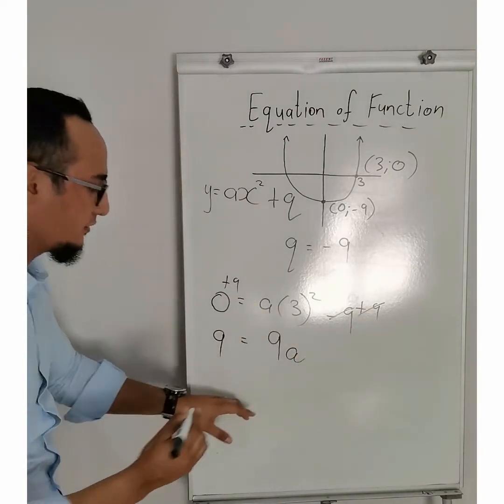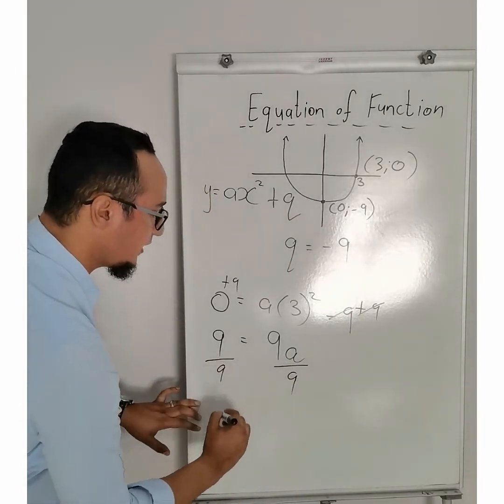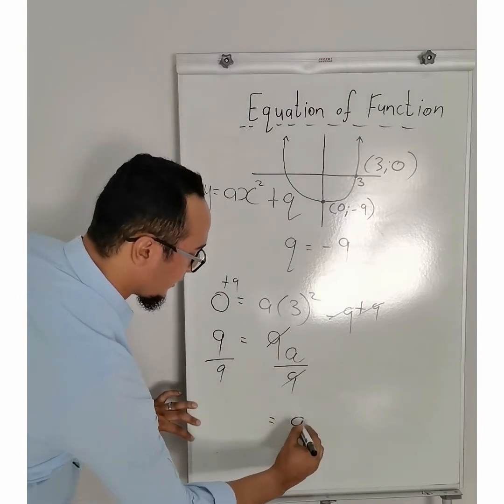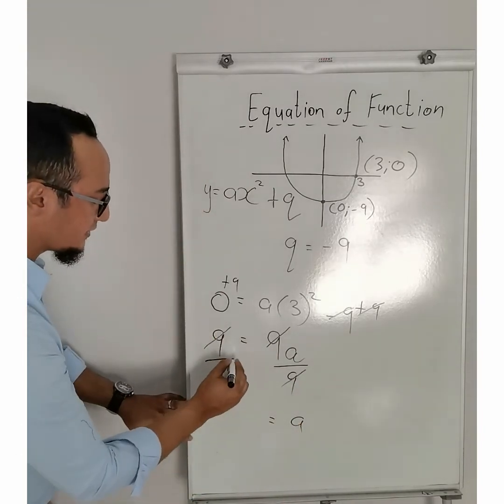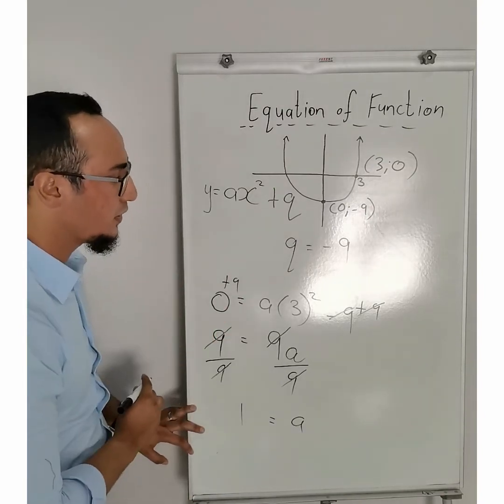So, divided by 9. What I do on the right-hand side, I need to do on my left-hand side. That divides, and I have a, this divides, 9 divided by 9 is equal to 1, and the value of a is going to be equal to 1.